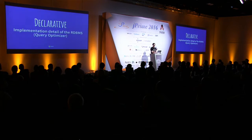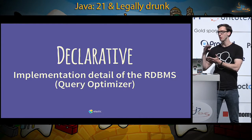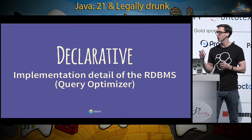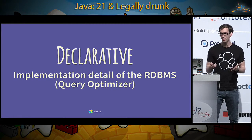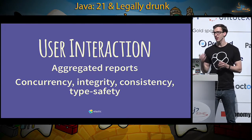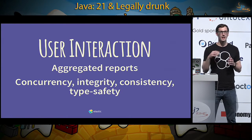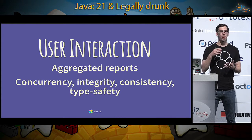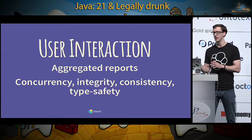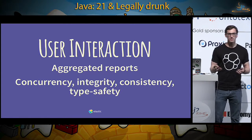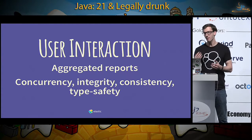The nice thing about relational databases is they're declarative. You declare what you want; you don't care how to iterate over entries. You just tell the database 'give me that,' and the query optimizer handles it. This worked well for a long time. SQL was originally built for user interaction — even secretaries could query the database. SQL takes care of concurrency, integrity, and type safety for you. Aggregated reports were also discovered to be very useful and were added to the SQL standard.